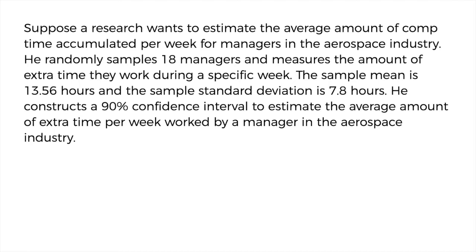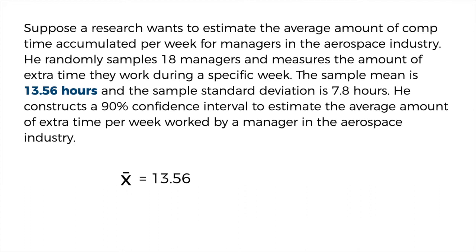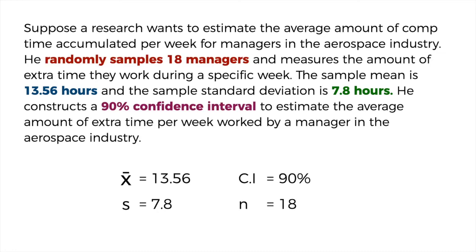The researcher constructs a 90% confidence interval to estimate the average amount of extra time per week worked by a manager in the aerospace industry. The formula is: X-bar plus or minus T multiplied by the sample standard deviation over the square root of N. The given values are: X-bar equals 13.56 hours, sample standard deviation S equals 7.8 hours, sample size n equals 18, and confidence interval equals 90%.